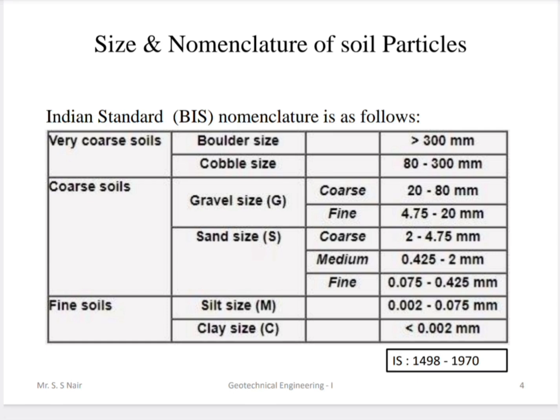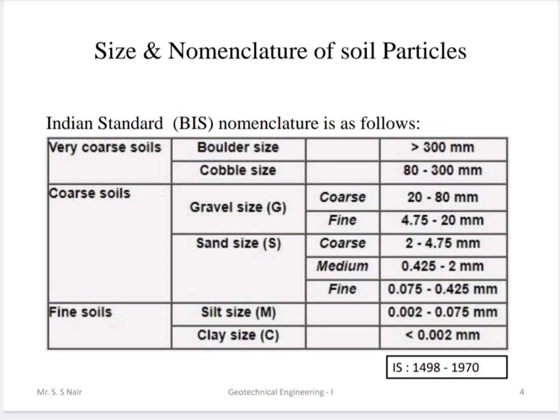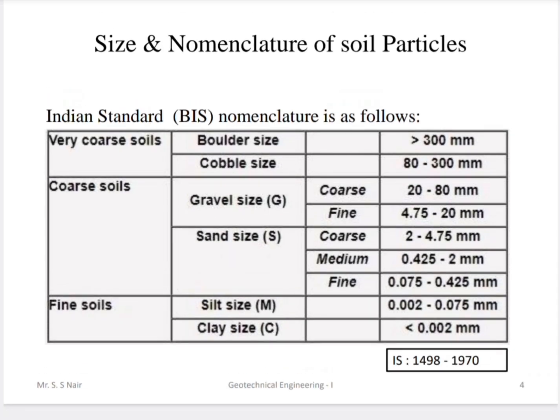Finer gravel and sand: 2 to 4.75 mm; coarser sand: 0.425 to 2 mm; medium sand: 0.075 to 0.425 mm. For finer soils: silt ranges from 0.002 to 0.075 mm, and clay is less than 0.002 mm.